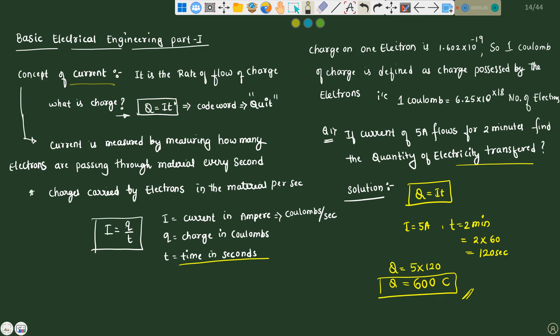In order to remember this formula for charge, you should remember the code word called quit. Here you can replace U with equals to, then it will become charge. So current is measured by measuring how many electrons are passing through material every second. Charges carried by electrons in the material per second. Charge on one electron is 1.602 into 10 to the power of minus 19.